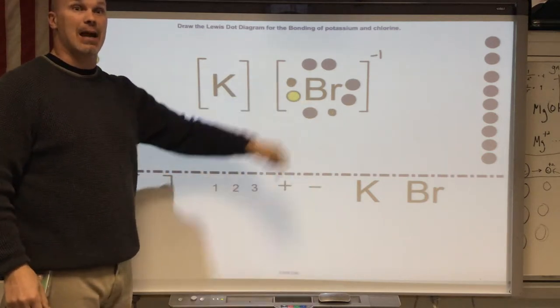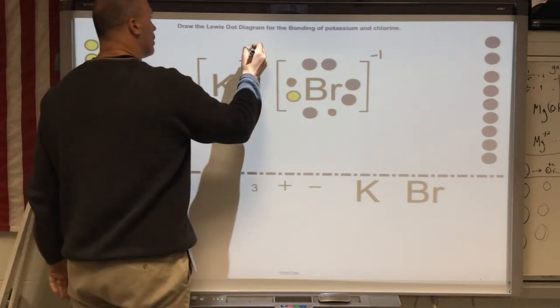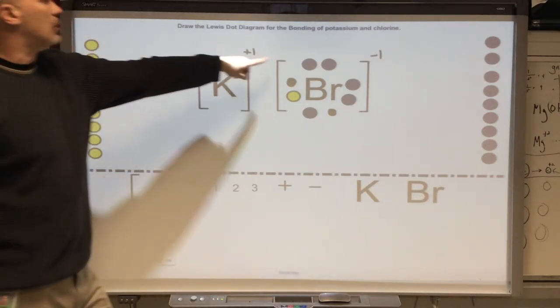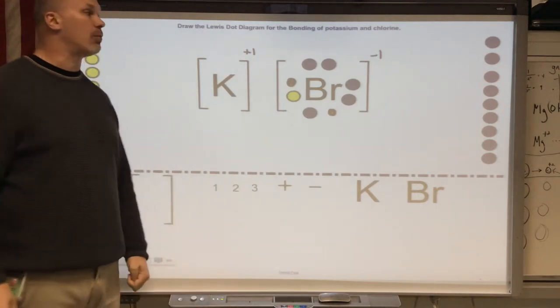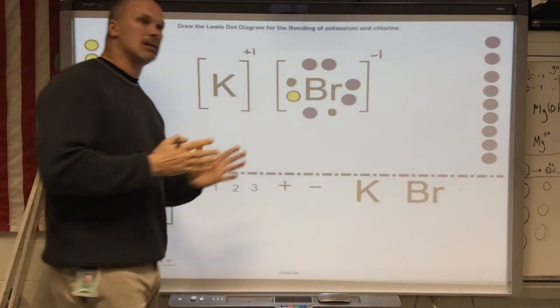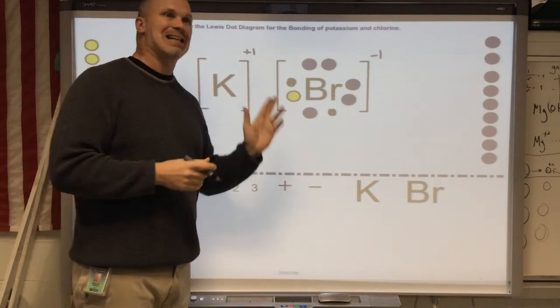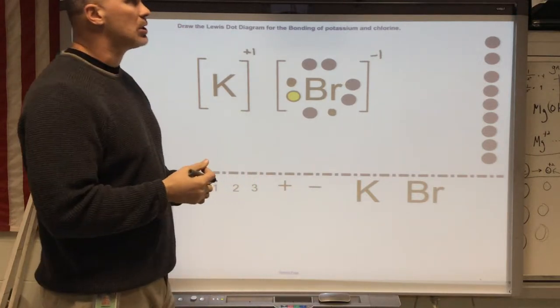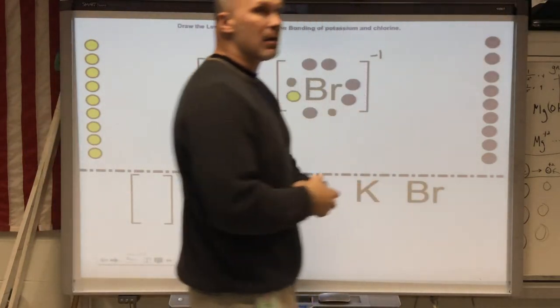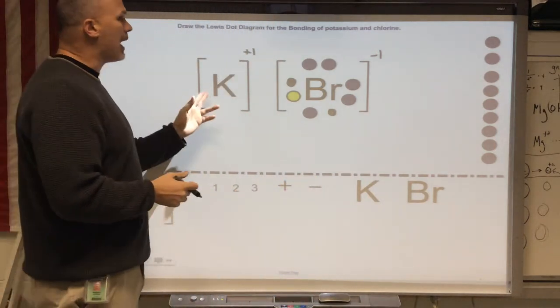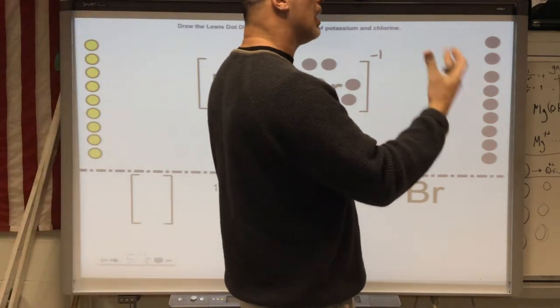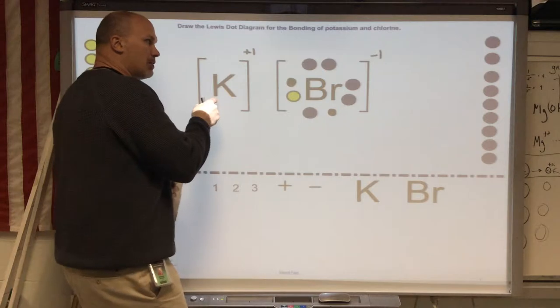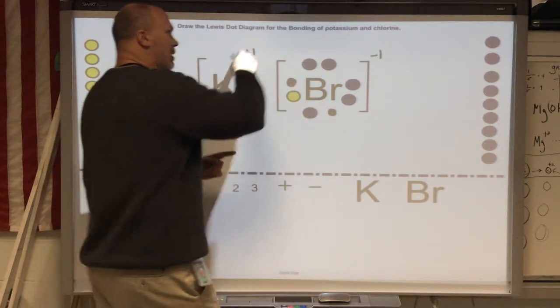Notice bromide has its octet. Now, how do I know I'm done? Well, I know I'm done because, number one, the charge equals zero. When you build a chemical formula, the charge becomes zero. And I know that each element is now as stable as a noble gas. Bromide gained one and now has eight. Just like in its row, if you look, krypton has eight. Potassium lost one to have the same electron configuration as argon.